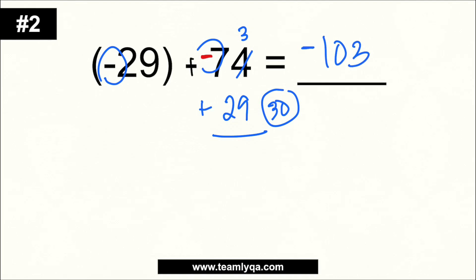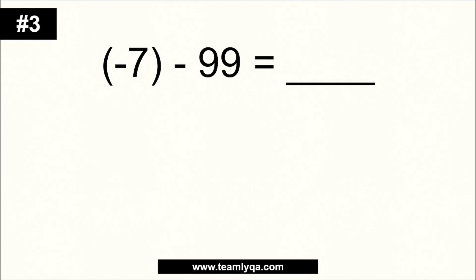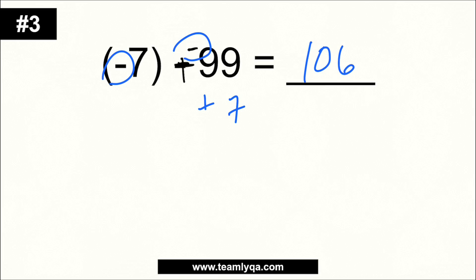Now the positive becomes negative. They share the same sign, so all we have to do is add them together. 99 plus 7 is 106, and we just copy the sign. The answer is negative 106.